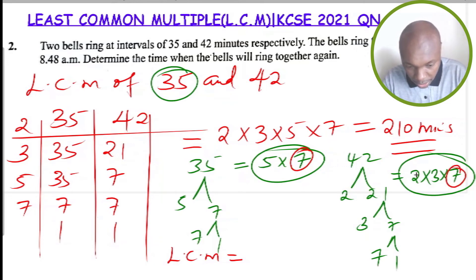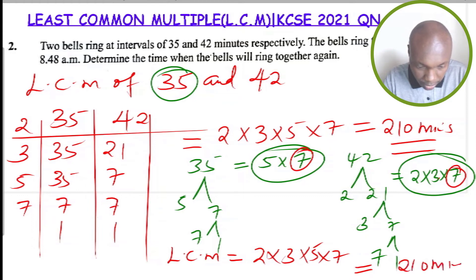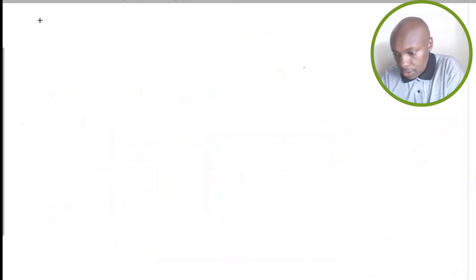So we have 2, we have 3, multiply by 3, then we have 5, and then for 7, since it is common and repeated in both our numbers, we just pick it once. And these will give 6 to give us the same thing: 210 minutes.